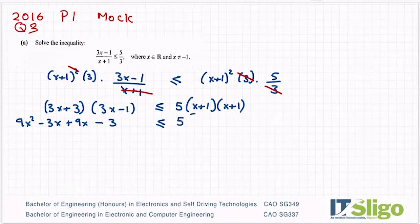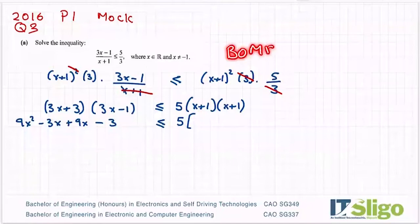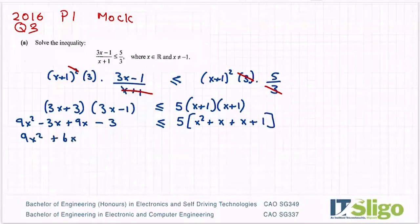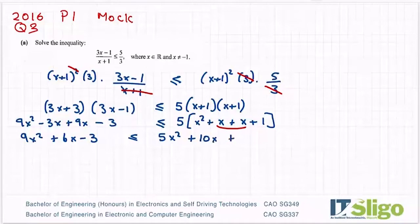Let's have a look on the right-hand side. I need to do (x + 1)² before the 5 because of BODMAS — the O for order (or E for exponent) comes before multiply. So (x + 1)(x + 1) gives x² + x + x + 1. Tidying up the left: 9x² + 6x − 3 ≤ 5(x² + 2x + 1), which gives 5x² + 10x + 5.